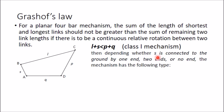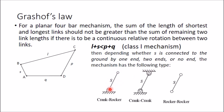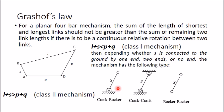When L plus S is less than P plus Q, it is called a Class 1 mechanism. Depending on whether the shortest link S is connected to the ground by one end, two ends, or no end: if one end of the shortest link is fixed, you get a crank-rocker mechanism; if both ends are fixed, you get a crank-crank mechanism; if neither end is fixed, you get a rocker-rocker (double rocker) mechanism. If L plus S is greater than P plus Q, it is a Class 2 mechanism and you always get only a rocker-rocker mechanism.